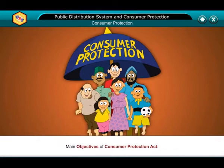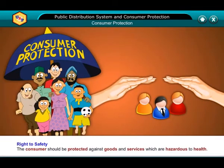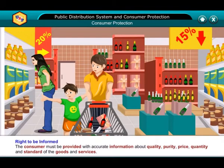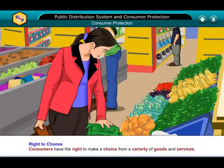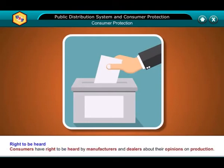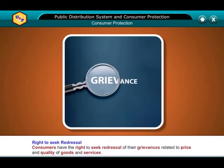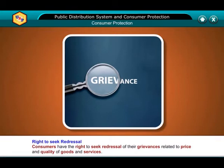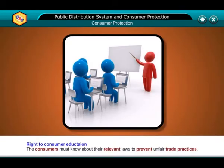Main objectives of the Consumer Protection Act: Right to safety — the consumer should be protected against goods and services which are hazardous to health. Right to be informed — the consumer must be provided with accurate information about quality, purity, price, quantity and standard of the goods and services. Right to choice — consumers have the right to make a choice from a variety of goods and services. Right to be heard — consumers have the right to be heard by manufacturers and dealers about their opinions. Right to seek redressal — consumers have the right to seek redressal of their grievances related to price and quality of goods and services. Right to consumer education — consumers must know about relevant laws to prevent unfair trade practices.